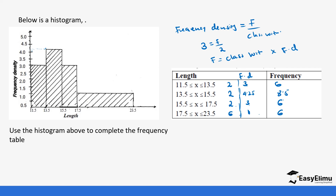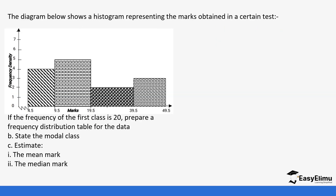I hope you have been able to understand what we have done — use the formula: frequency equals class width times frequency density. Let's look at another question. The diagram below shows a histogram representing the marks obtained in a certain test. Once again we are using frequency density, which tells you that the class intervals are not uniform.